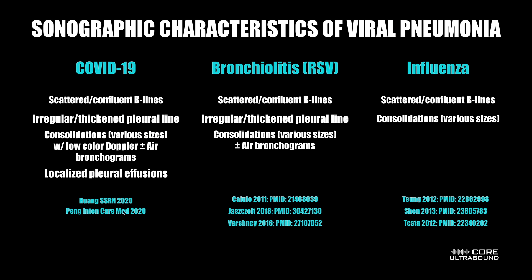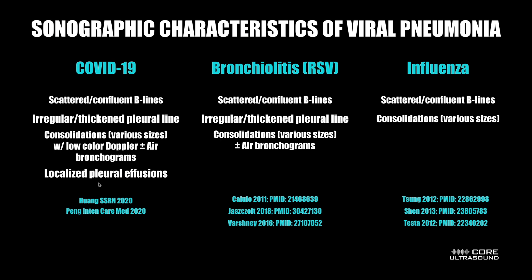For COVID-19, there have been two studies published so far and they mention findings consistent with other viral pneumonias: scattered confluent beelines, irregular thickened pleural line, consolidations of various sizes, but they also mention a low color Doppler flow within the consolidations plus or minus air bronchograms. One study also mentions localized pleural effusions around the subpleural consolidations. What is almost completely absent with viral pneumonia is a pleural effusion — bacterial pneumonias often have a small pleural effusion, but with viral pneumonias there are no pleural effusions.